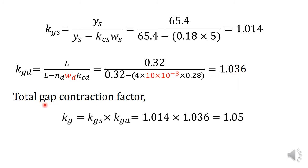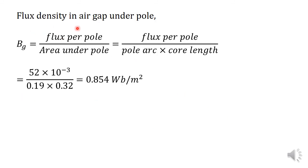The total gap contraction factor for slots and ducts is KGS into KGD, equal to 1.05. The flux density in the air gap under the pole, BG, is equal to flux per pole divided by area under pole (pole arc into core length). That is 52 × 10⁻³ divided by (0.19 × 0.32), which equals 0.854 weber per meter square.